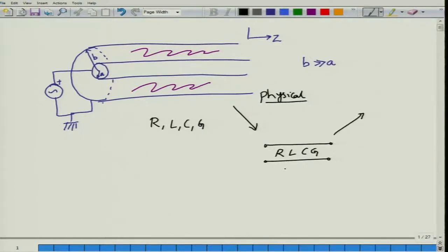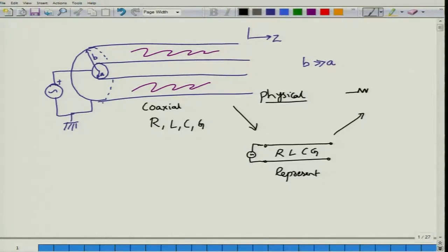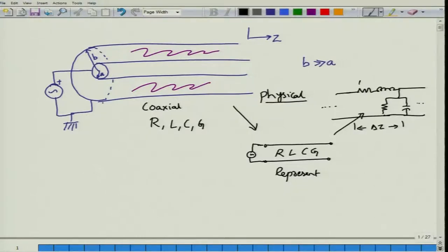In the transmission line model, the coaxial line is represented by two straight lines (wires), one for ground and one for signal. The model consists of inductance per unit cell, series resistance, shunt conductance, and shunt capacitance per unit cell — R, L, G, C arranged in a series impedance and shunt admittance configuration. This unit cell has length delta-z which goes to zero, so these parameters are per unit length. This is the model regardless of whether the physical structure is a coaxial line or a microstrip line.